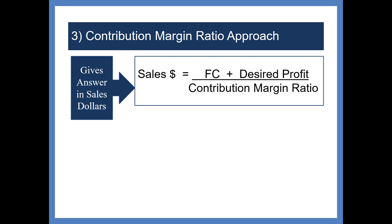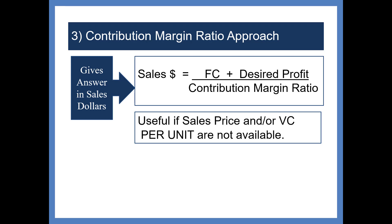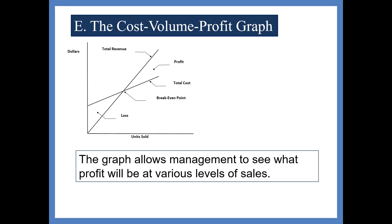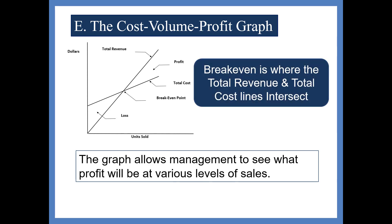The graph of the CVP situation shows where a company would have a loss, where they break even, and where they have a profit. It gives management a visual aid in assessing where revenue and cost lines will meet — above that intersection will be profit, and below it will be a loss. Next up, we'll work an example.